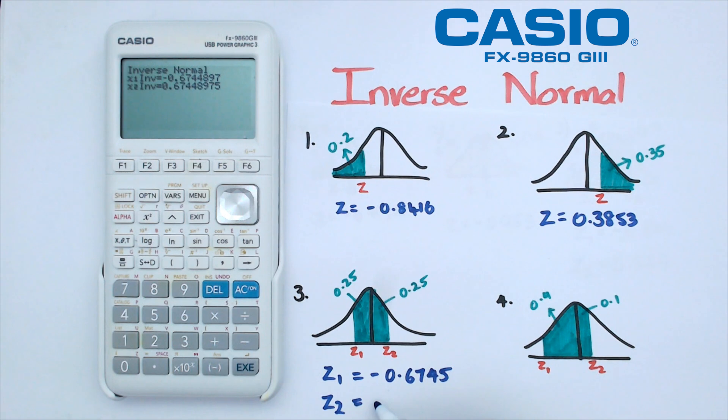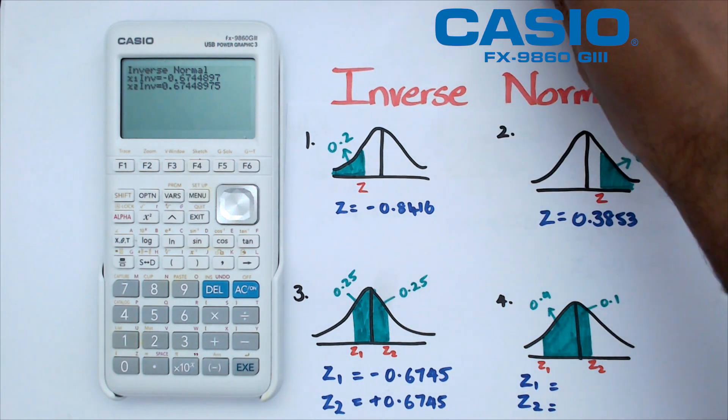Looking at question number 4, we've got 0.5 as the area again, but it's not symmetrical. We've actually got 0.4 on one side and 0.1 on the other side, so we've got to figure out z1 and z2. The way we're going to do this is slightly differently. You could use left-right combinations, but you won't be able to use the center combination.